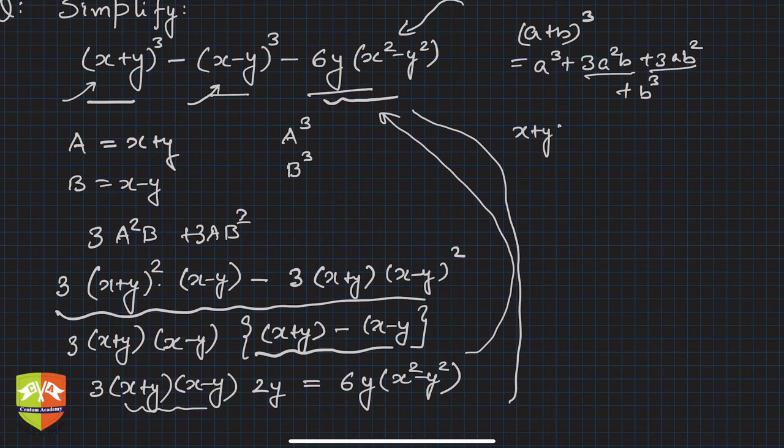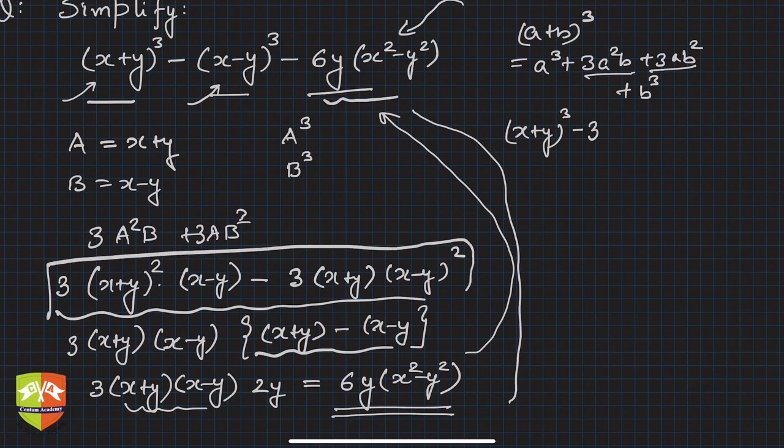Let's now solve it formally. I can write this as (x+y)³ minus... So 6y(x²-y²) can be written like this. This is the same as 6 times y(x²-y²).